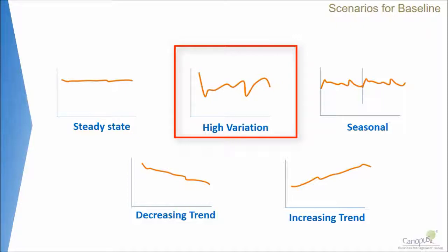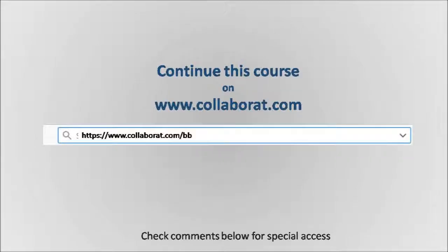Moving on to the second scenario — a scenario where the process is having high variation — baselining becomes a little bit difficult. In such scenarios where there is a lot of fluctuation or variation in the process, you...